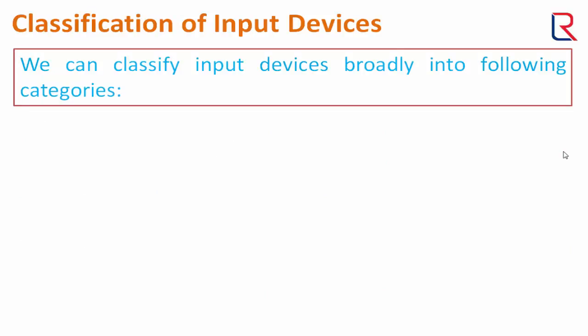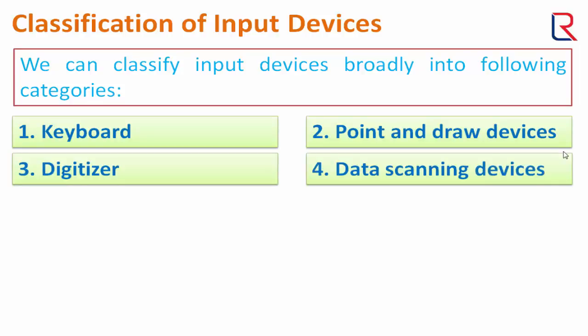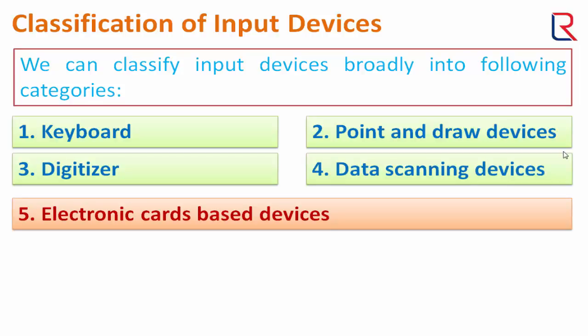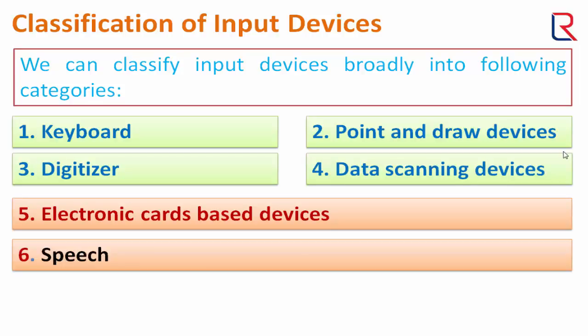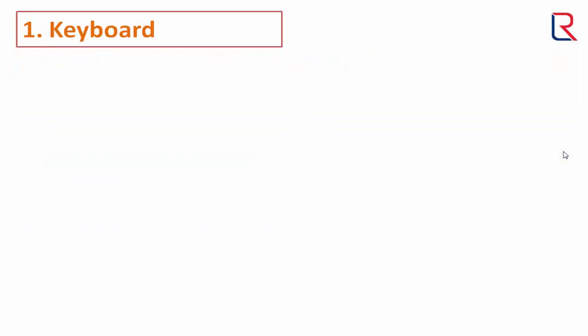Now see the classification of input devices. We can classify input devices broadly into the following categories: keyboard, point and draw devices, digitizer, data scanning devices, electronic card devices, speech recognition devices, and vision-based devices. In this video we are going to see only the first three input devices; the remaining input devices will be covered in the next video.